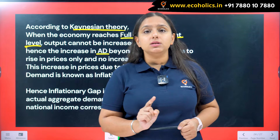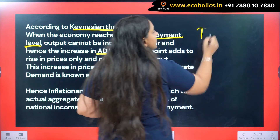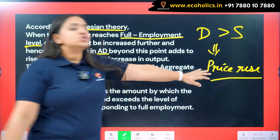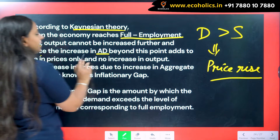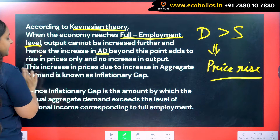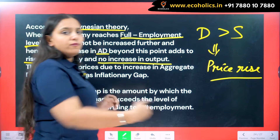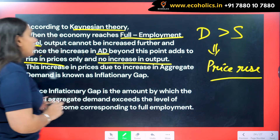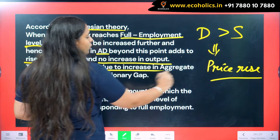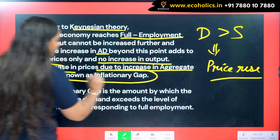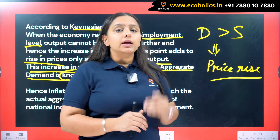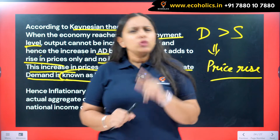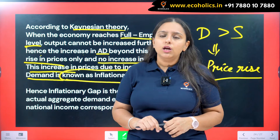You cannot supply greater than 100 units, so the only thing that happens is a rise in prices — because whenever demand is greater than supply, that leads to increase in prices, which is the concept of inflation. Hence, the increase in aggregate demand beyond this point adds to rise in prices and no increase in output, because even if producers want to increase supply, they cannot — there are no free resources available. This increase in prices due to increase in aggregate demand is known as the inflationary gap.